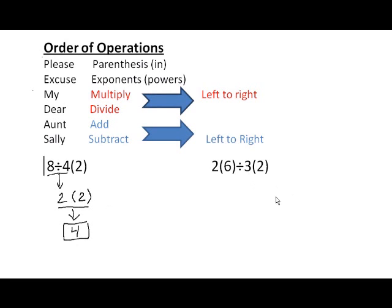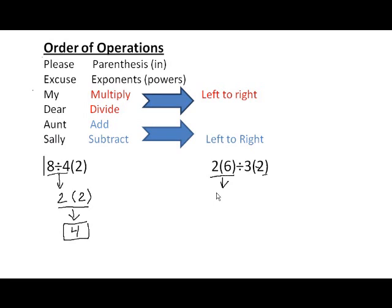The second problem. Step 1: do what's inside the parentheses. There's nothing inside the parentheses to do — the 2 is just sitting there. No powers either. So next, multiply and divide. We don't do multiply first or divide first; we go from left to right. The first multiply or divide we come across is 2 times 6, and 2 times 6 is 12.